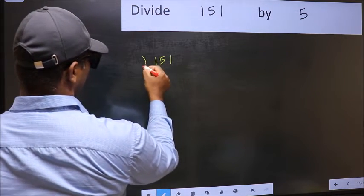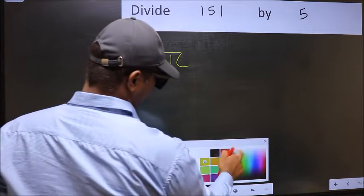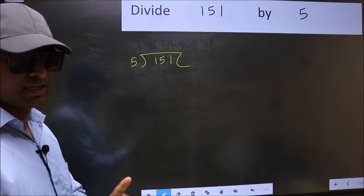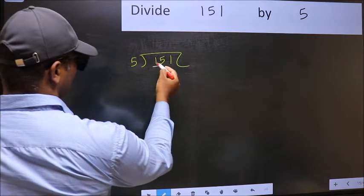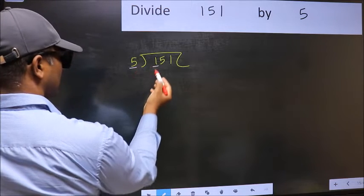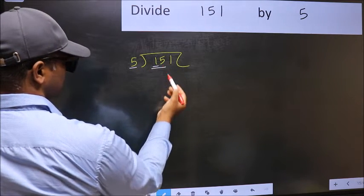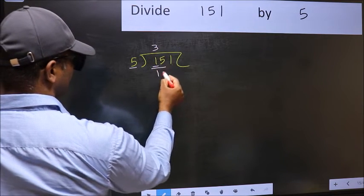151 and 5 here. This is your step 1. Next, here we have 1 and here 5. 1 is smaller than 5, so we should take 2 numbers, 15. When do we get 15 in 5 table? 5 times 3 is 15.